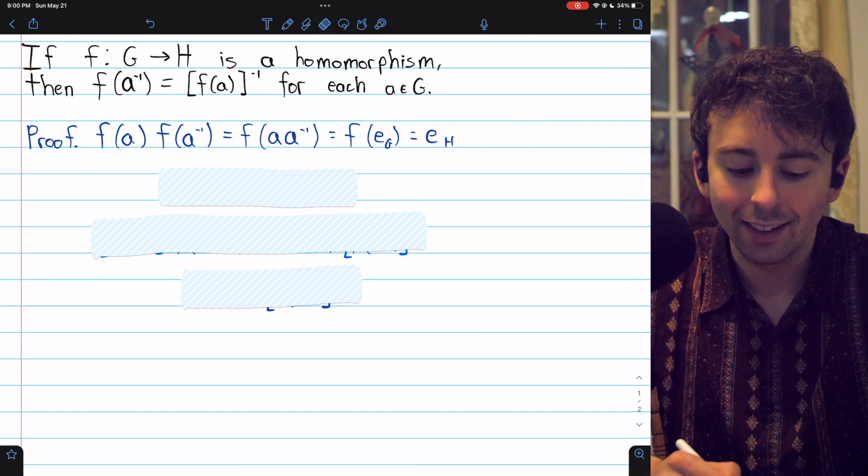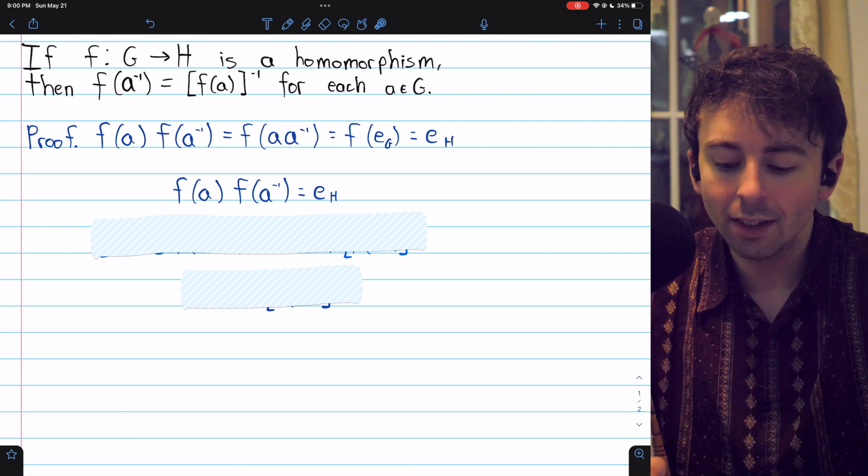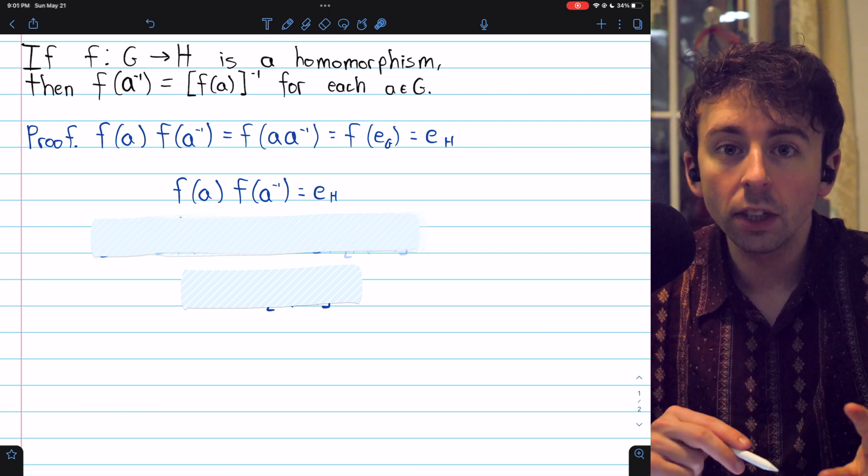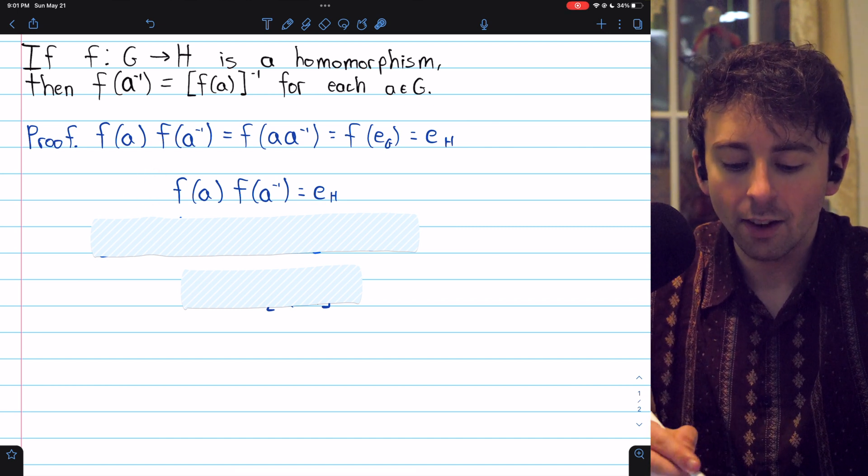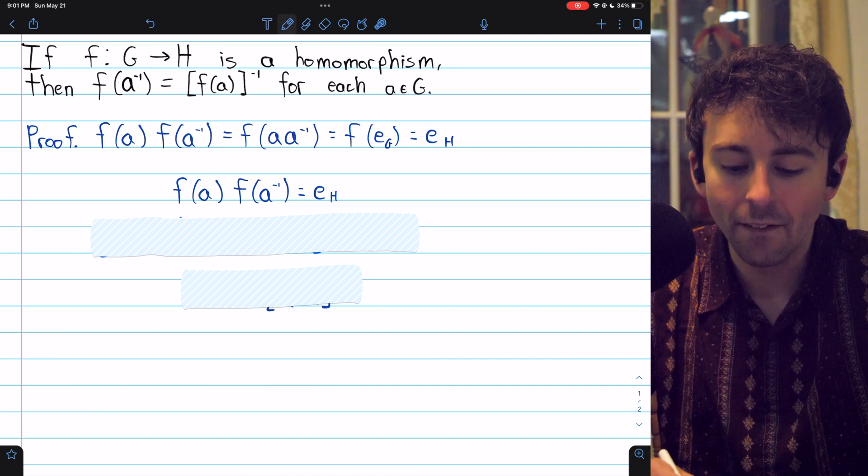So in total, what this line of equations has shown is that f(a)·f(a inverse) is equal to the identity of the group H. Only one more step to reach our result. We're going to multiply both sides on the left by the inverse of f(a).